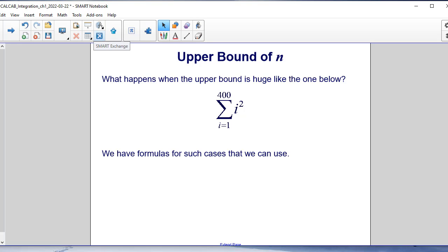Let's talk about the upper bound of n and what would happen when the upper bound is huge like the one below where you're summing up to 400, which means you would have to add 400 terms. An example of that would be if I take i squared, I would have to start with 1 squared plus 2 squared plus 3 squared plus 4 squared and continue that all the way up to 400 squared, which is quite an arduous task. So we do have formulas in such cases which we can use, and we're going to explore some of those formulas.